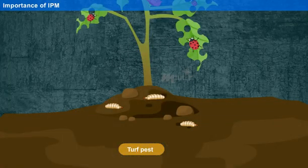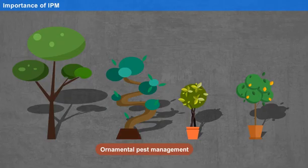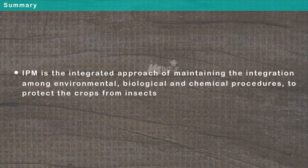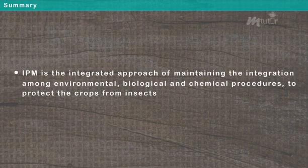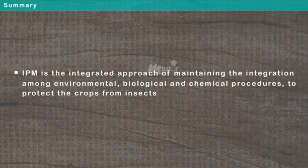Summary: Let us do a recap of what we have learned in this lesson. IPM is the integrated approach of maintaining the integration among environmental, biological and chemical procedures to protect the crops from insects.